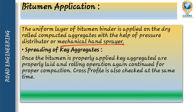Next is spreading of key aggregate. Once the bituminous binder is properly applied, the key aggregates are laid and rolling operation again continues for proper compaction. The cross profile is also checked at the same time to ensure good profile for the bituminous road.